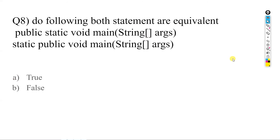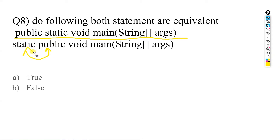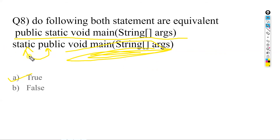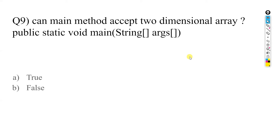Are the following two main method signatures equivalent? 'public static void main(String[] args)' versus 'static public void main(String[] args)'. The positions of public and static have been interchanged. The answer is A — true. We can interchange public and static, but the rest of the signature must remain the same. Both statements are equivalent.